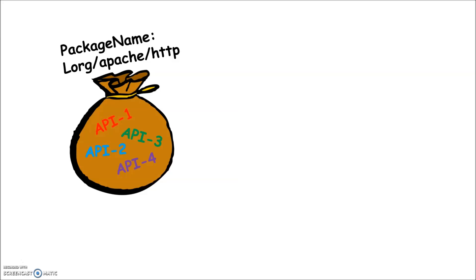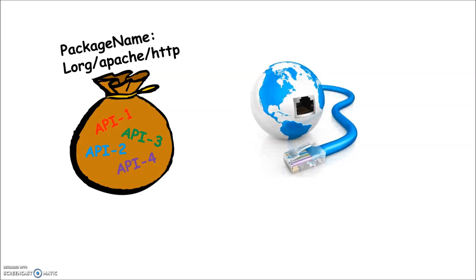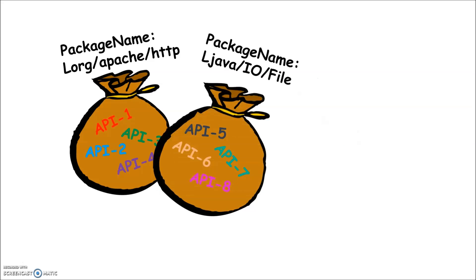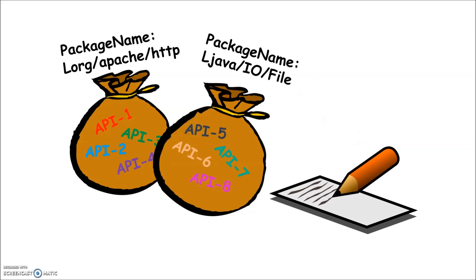We find that API calls which belong to the same package show similar intent. For example, API calls in the HTTP package are related to internet connection, and API calls in the IOFile package are related to reading and writing files.